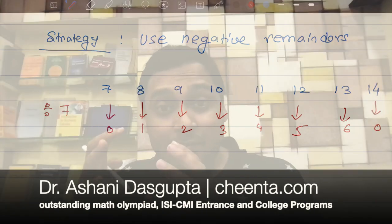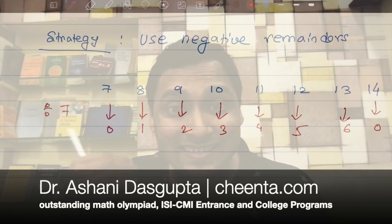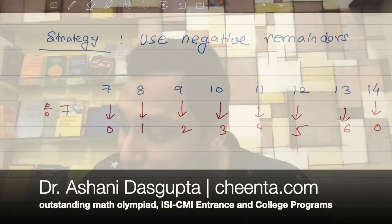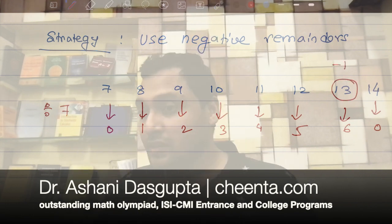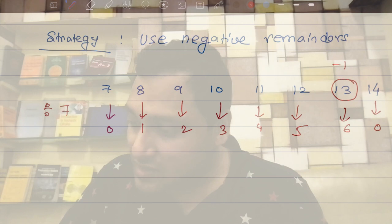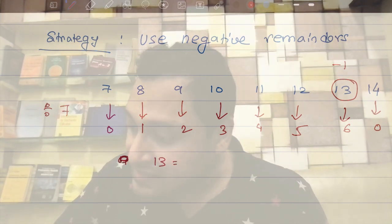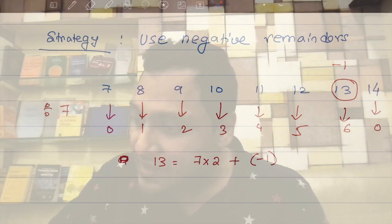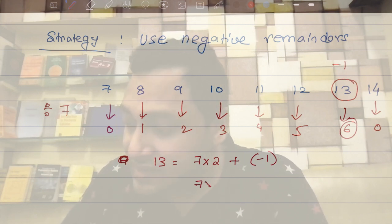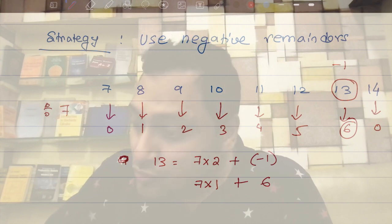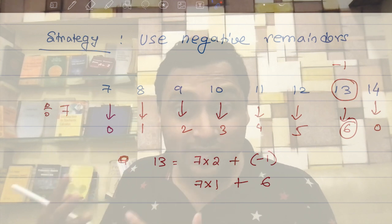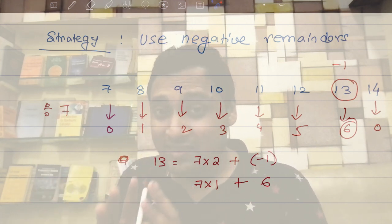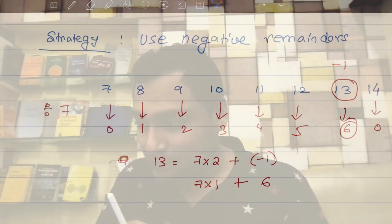Now, sometimes it is more useful to write the remainders as negatives. So, in fact, it's often useful to do it from the midline. It is useful to notice that 13 gives a remainder of negative 1 when you divide by 7. Because you can write 13 as 7 times 2 plus negative 1. So you can think of this negative 1 as the remainder. When we wrote 6 as the remainder, 6 was the remainder because 13 is 7 times 1 plus 6. Usually, we think of remainders and quotients as positive numbers. But sometimes, sometimes it is more useful to think of them as negative numbers as well.